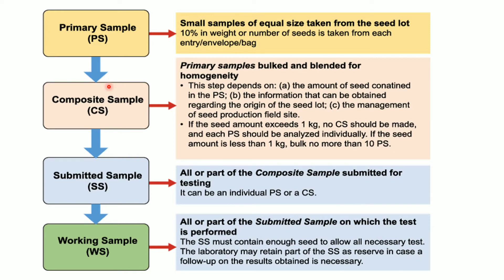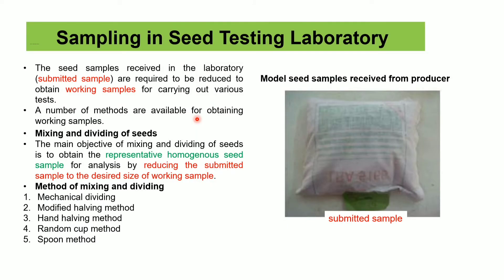In the seed testing laboratory, the submitted sample is received and further reduced into working samples. These working samples are used for purity analysis. The method of reduction from submitted sample to working samples is done by the most popular method: mixing and dividing of seeds, which facilitates representation of homogeneous seed samples. Several methods used for mixing and dividing are: mechanical method, modified halving method, hand halving method, random cup method, and spoon method.